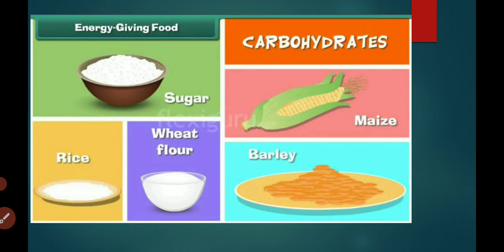Energy-giving food: food items that contain carbohydrate are called energy-giving food. Bread, rice, chapati, sugar, potatoes, and oats are examples of food that contain carbohydrate and give us energy. We need energy to work and play. These food items are called energy-giving food.